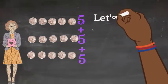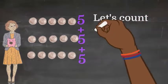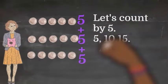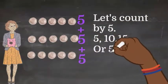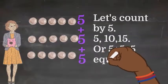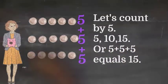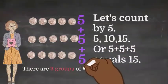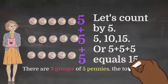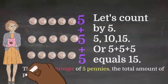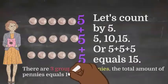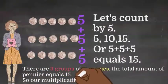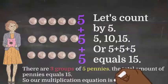So let's count by 5. If you know how to count by 5, count along: 5, 10, 15. Or 5 plus 5 plus 5 equals 15. There are 3 groups of 5 pennies. The total amount of pennies equals 15. So our multiplication equation is 3 times 5 equals 15.